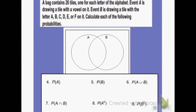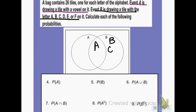The second problem says a bag contains 26 tiles, one for each letter of the alphabet. Event A is drawing a tile with a vowel on it. Event B is drawing a tile with the letters A, B, C, D, E, or F on it. I'm going to start by writing what's in event B and putting it in circle B. A is a vowel, so it will go in both A and B. B is not a vowel. C is not a vowel. D is not a vowel. E is a vowel. And F is not a vowel, so it goes in circle B only.